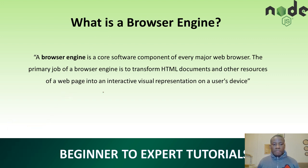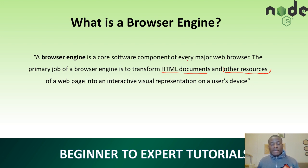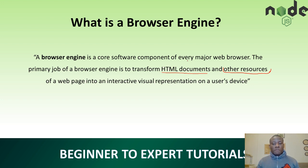Let me highlight the key point here. We have HTML documents and then other resources. A browser engine transforms HTML documents, CSS, scripts, images — anything that can actually be rendered in a browser is interpreted using a browser engine and passed to the computer.